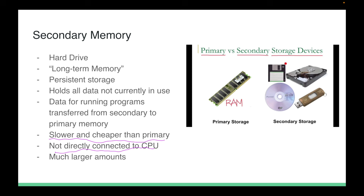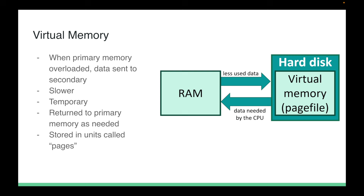Virtual memory is utilized when primary memory is overloaded — a typical case is running memory-intensive games or video editing programs. Data from the RAM, generally less-used data, is sent to a section of the secondary memory in units called pages. When that data is needed again it gets transferred back to RAM. Virtual memory is slower and temporary, so programs currently running will generally run slower — hence why having more RAM is always better for performance.